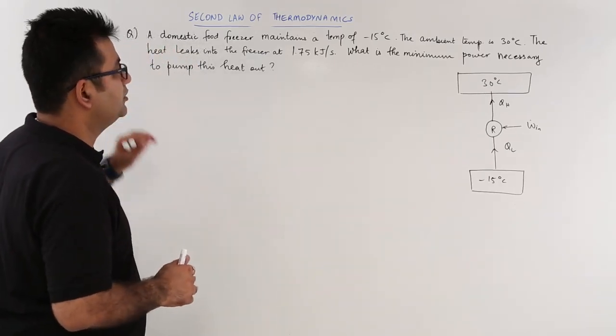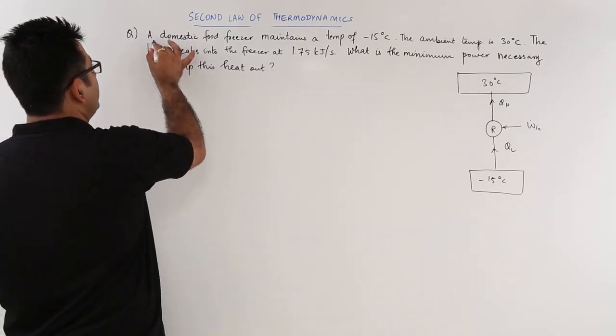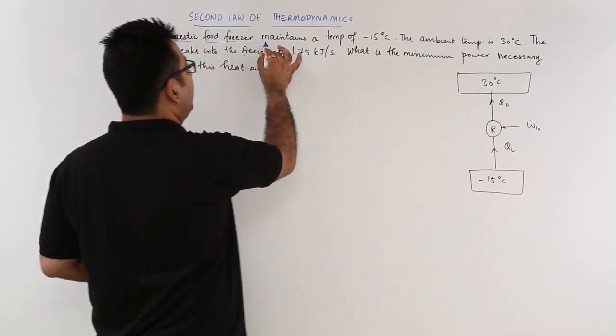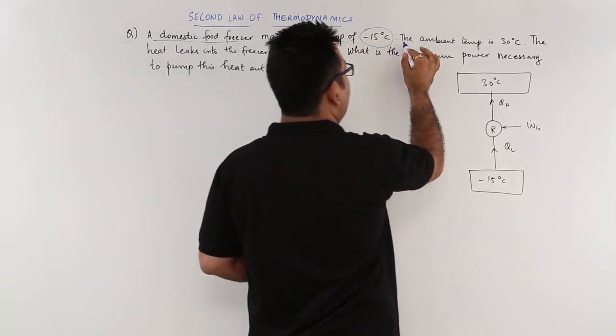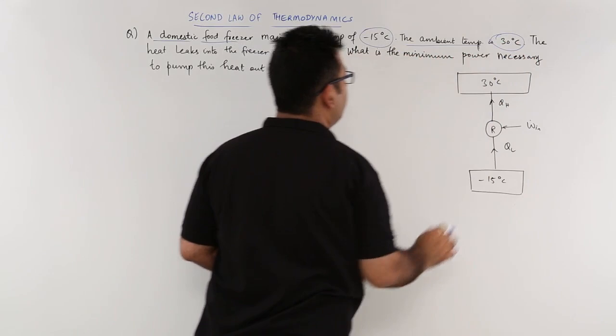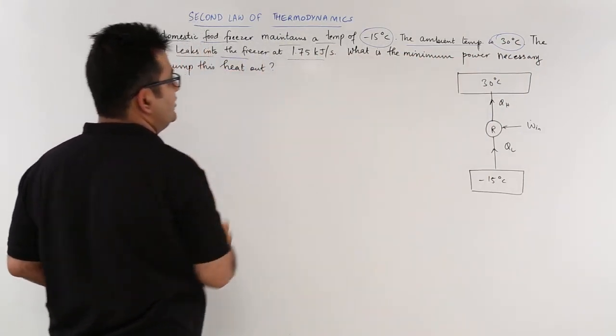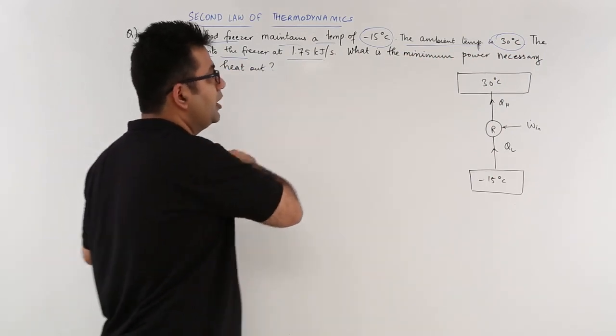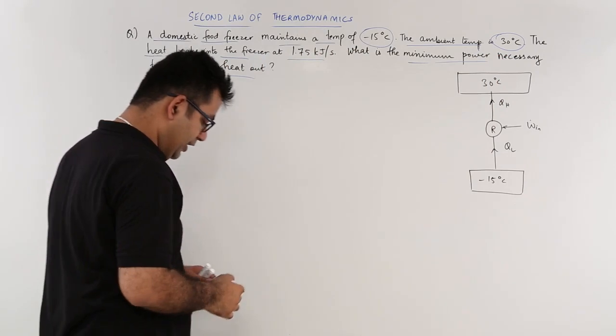Now let's have a look at this question on a refrigerator. A domestic food freezer maintains a temperature of minus 15 degrees Celsius, the ambient temperature is 30 degrees Celsius, the heat leaks into the freezer at 1.75 kilowatts. What is the minimum power necessary to pump this heat out?